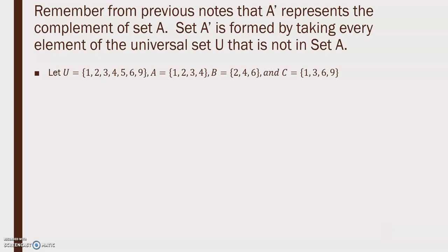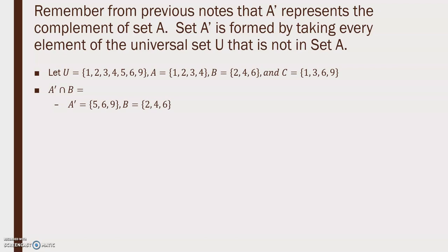Let U = {1, 2, 3, 4, 5, 6, 9}, A = {1, 2, 3, 4}, B = {2, 4, 6}, C = {1, 3, 6, 9}. Find A' intersect B. First write A' = {5, 6, 9} — the things in U that aren't in A. Set B is {2, 4, 6}. The intersection of those two sets is just {6}.